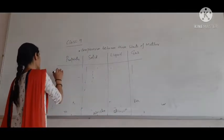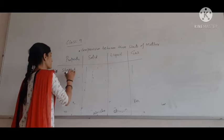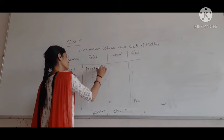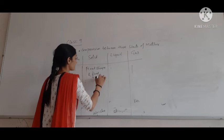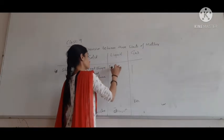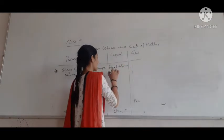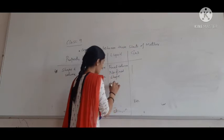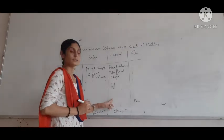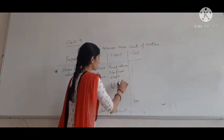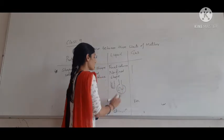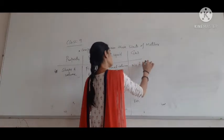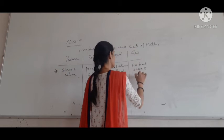The fourth property is shape and volume. Solids have fixed shape and fixed volume. Liquids have fixed volume but no fixed shape — when we fill water in a test tube it takes the shape of the test tube, and in a beaker it takes the shape of the beaker. Gases have no fixed shape and no fixed volume.